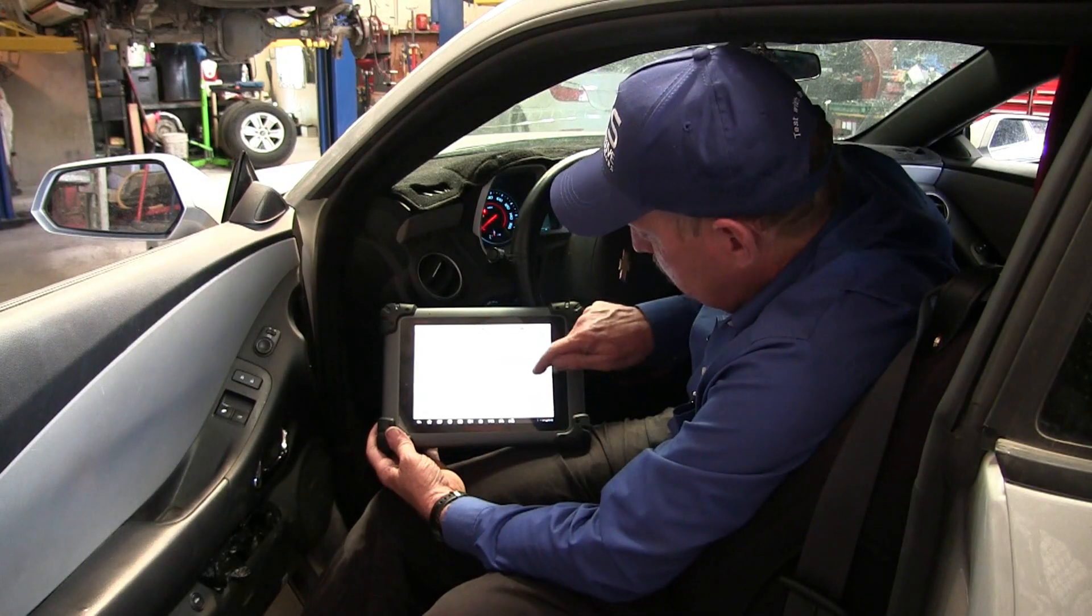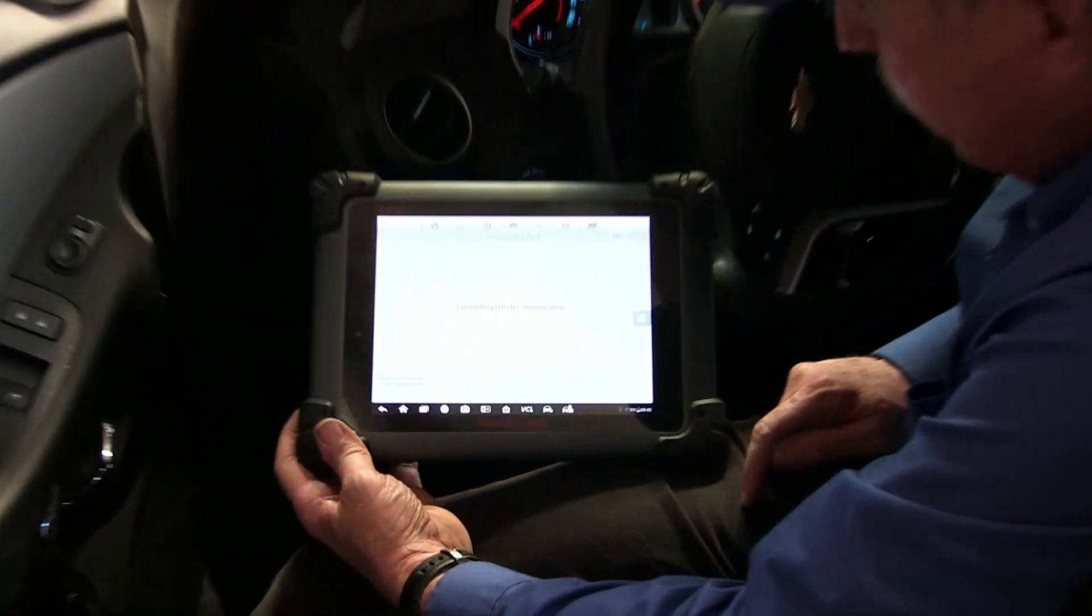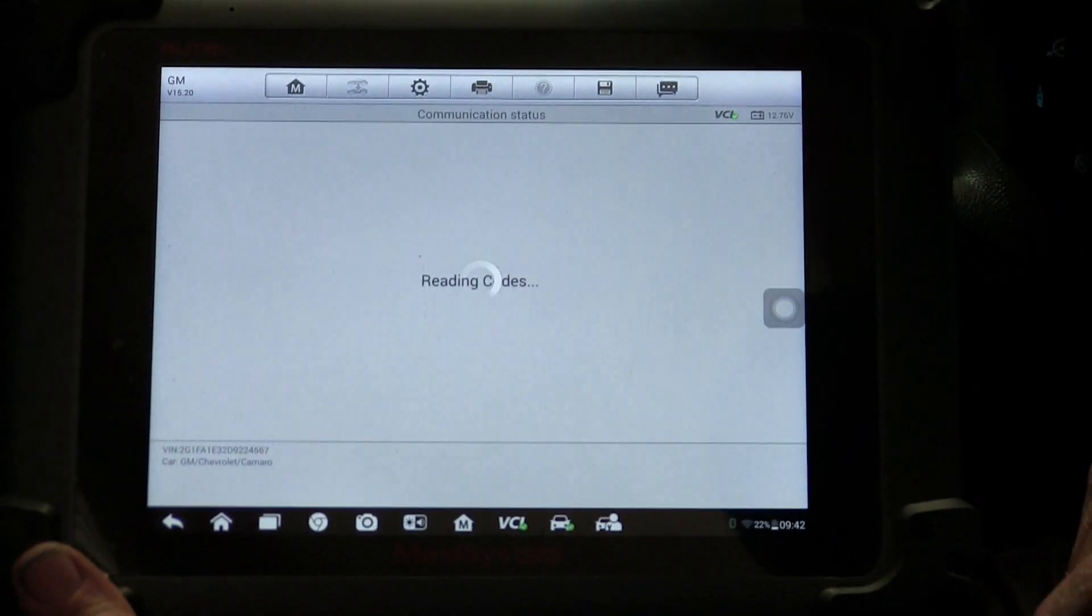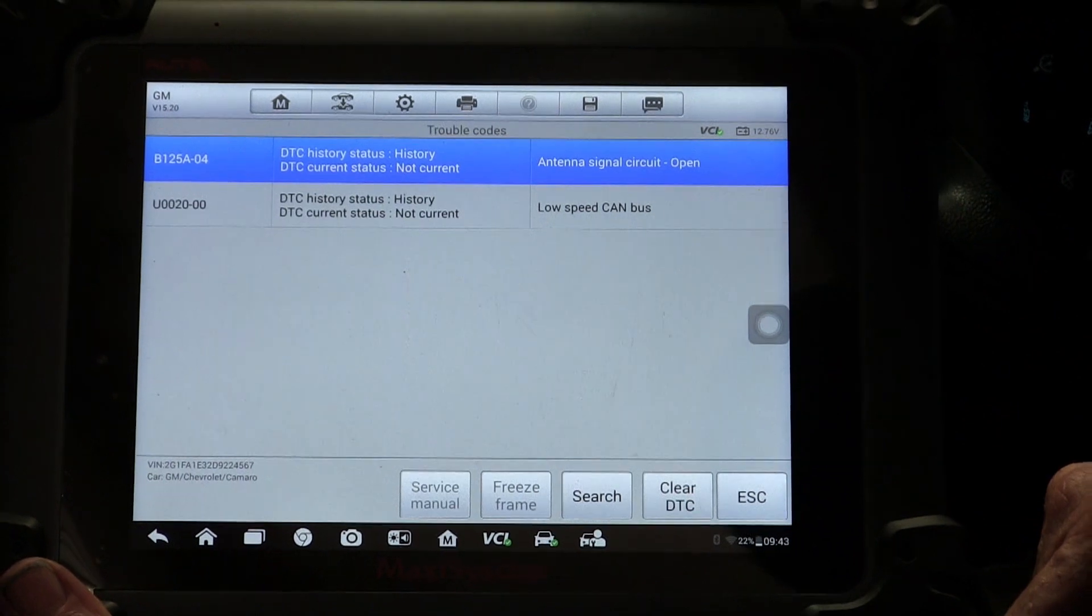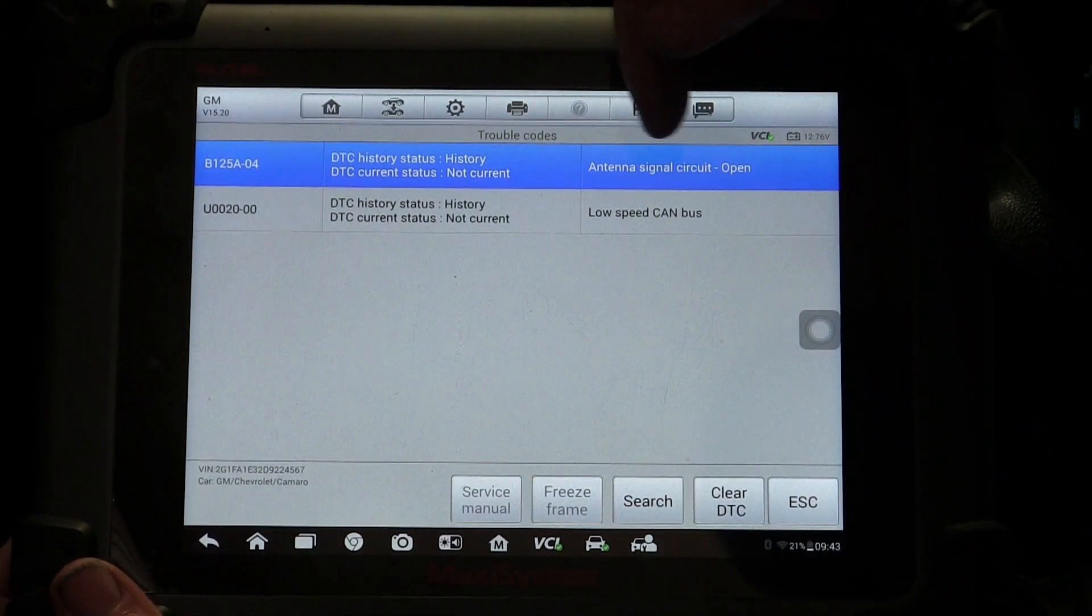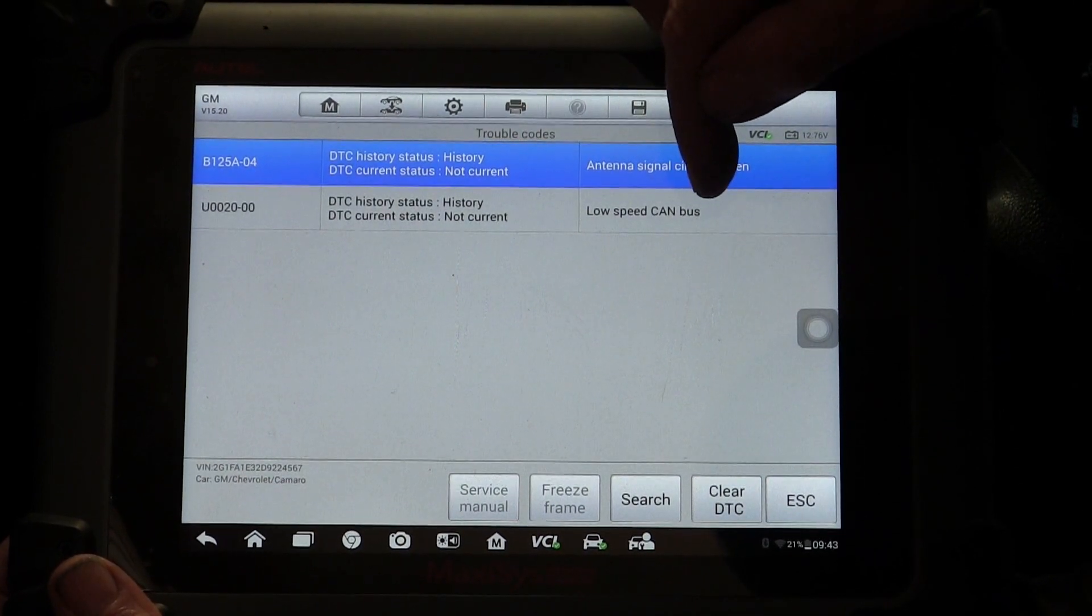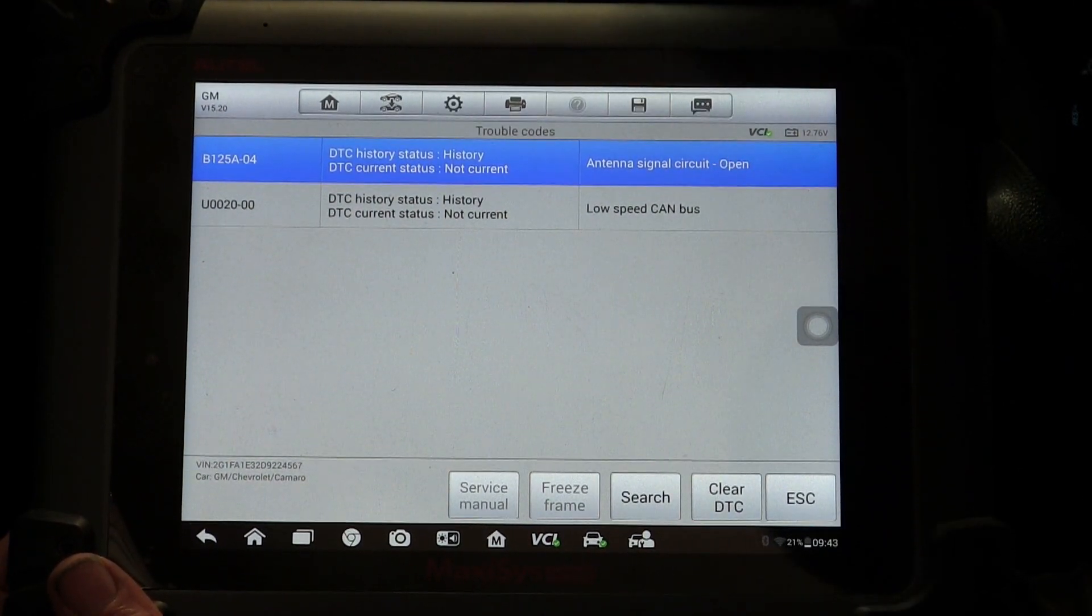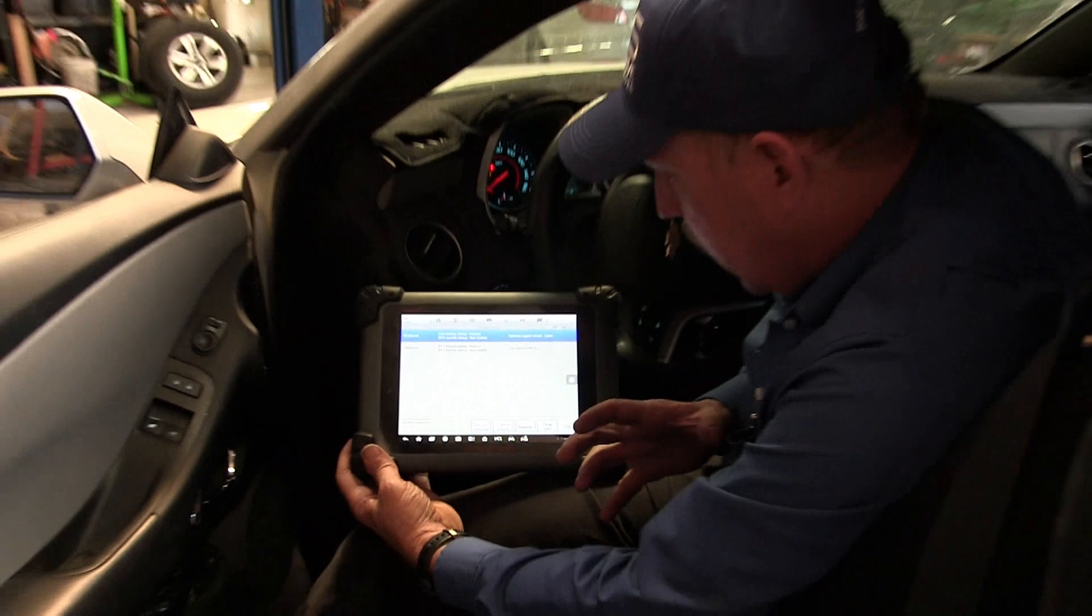So now I want to go in and get into the radio. I want to get the trouble codes. So we have a code for an antenna and we have a code for the low speed CAN bus failure. So these are my codes.